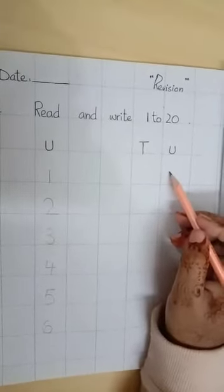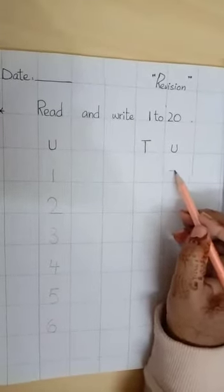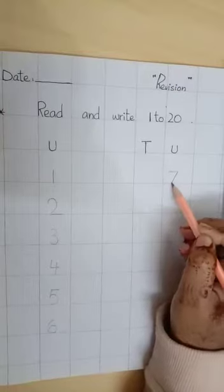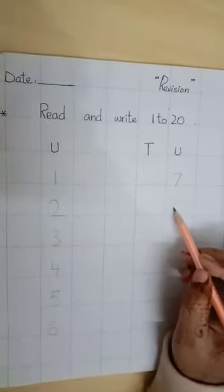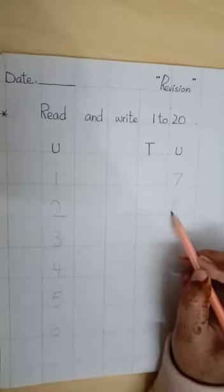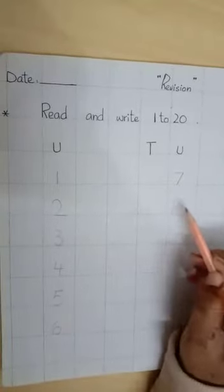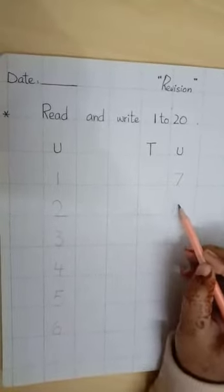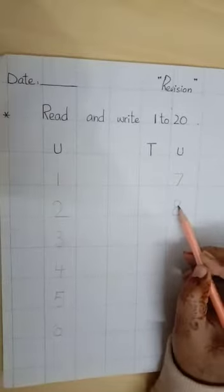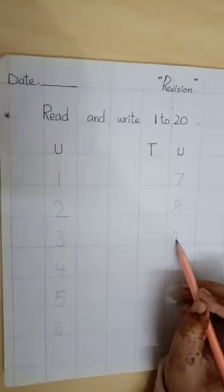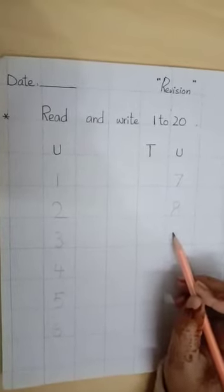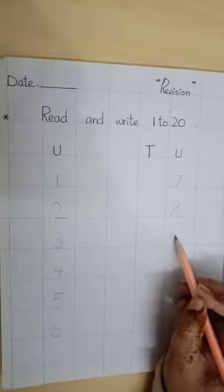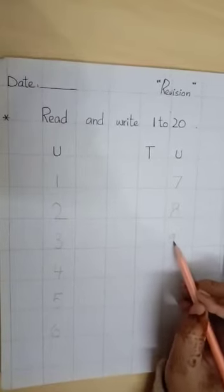Next we have 7, like 7 up. After this, 8 is like sleeping snake. 9 is round, must come down.